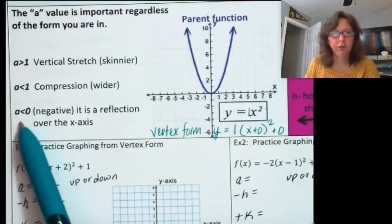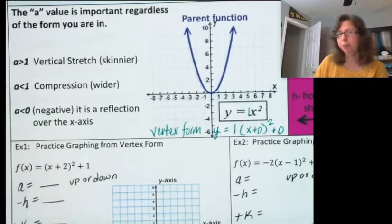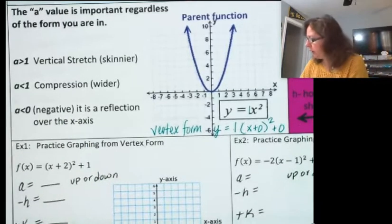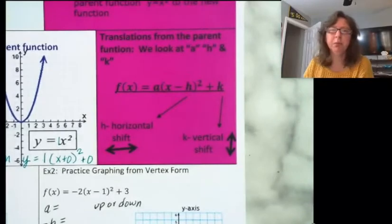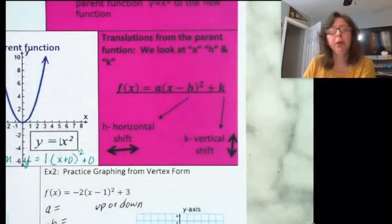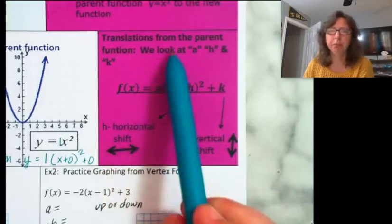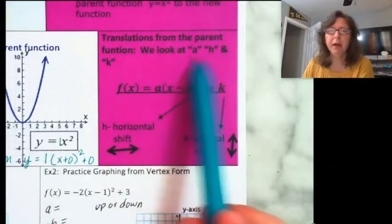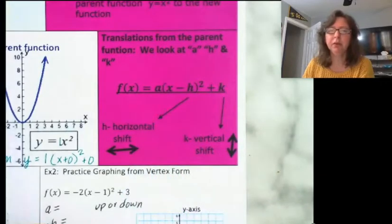If the a value is negative, it goes down — that is a reflection over the x-axis. Let's take a look more specifically at the translations from the parent function to other functions. We want to look at a, h, and k. The a value tells us everything we just discussed.